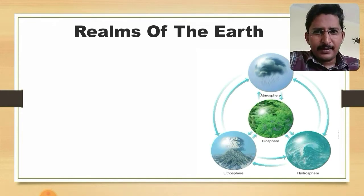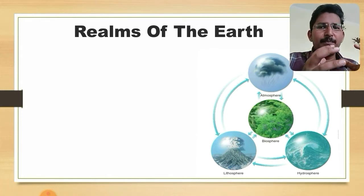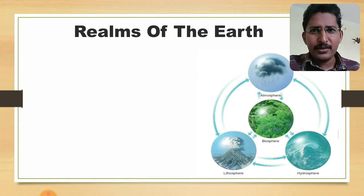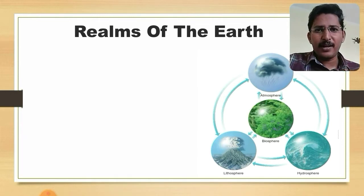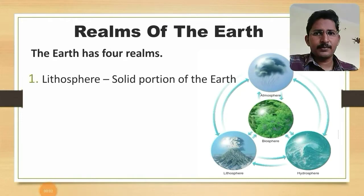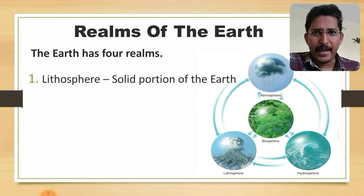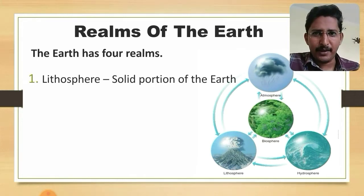When we say 'the Earth,' it does not mean just a spherical heap of soil as we see in pictures. Rather, it includes four realms that together constitute the Earth. The first realm is the lithosphere — the land portion including mountains, valleys, plains, and the soil on which we stand.